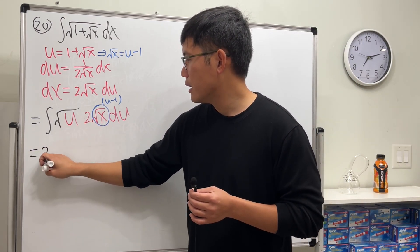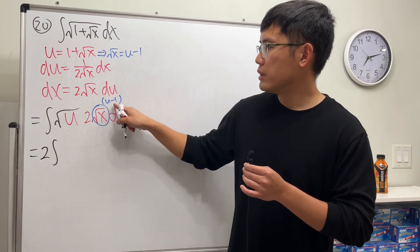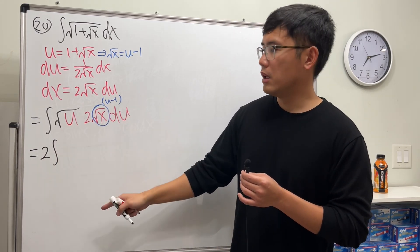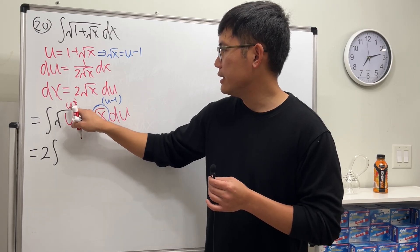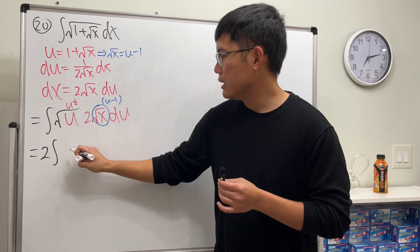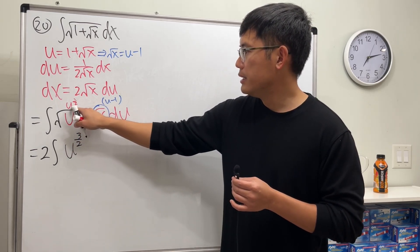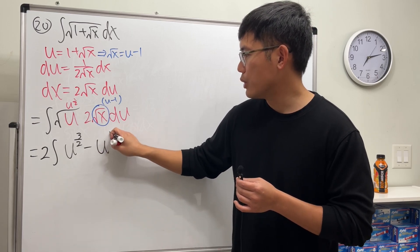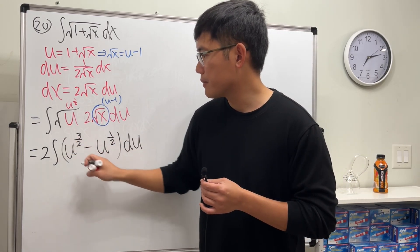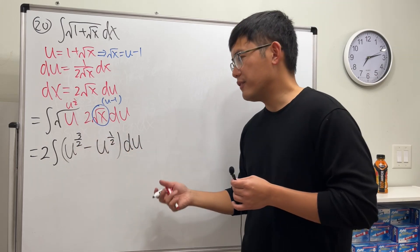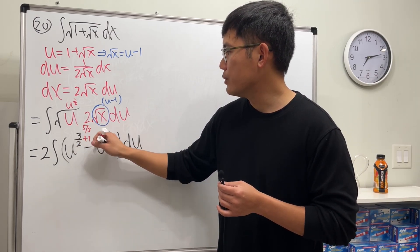We put the 2 at the front, and then the integral becomes square root of u times (u minus 1). Writing square root of u as u to the one-half power and distributing: u to the one-half times u gives u to the three-halves, and u to the one-half times negative 1 gives minus u to the one-half. Now we integrate by adding 1 to each power and dividing by the new power.